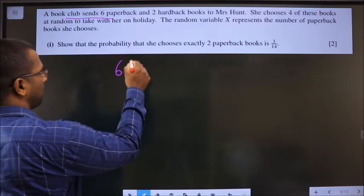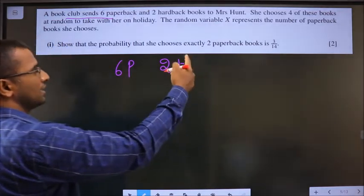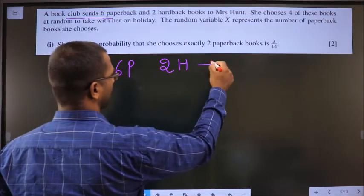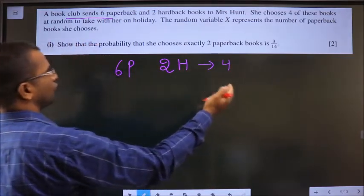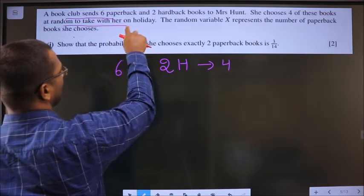6 are paper, 2 are H, let us say. She chooses 4 of these books. She is selecting 4 at random with her on holiday.